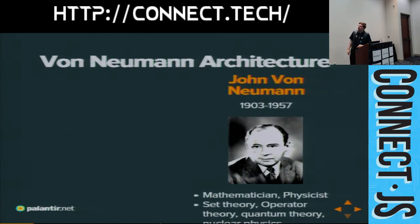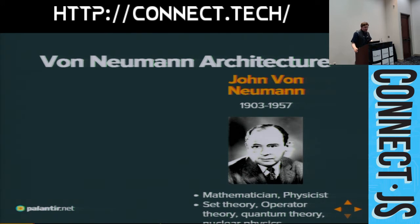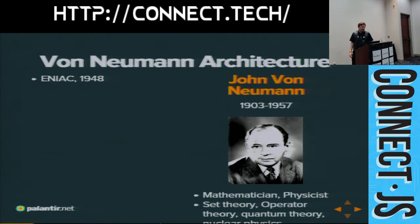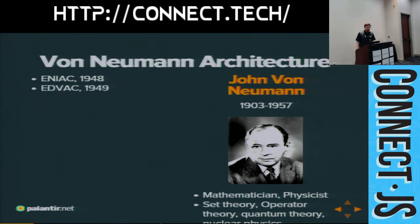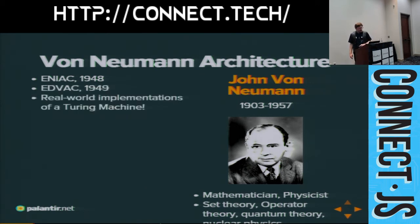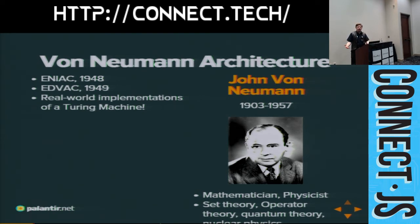Let's fast forward a little bit to a man named John Von Neumann — another mathematician and physicist who helped develop set theory, worked on the Manhattan Project, worked on quantum theory. One of those people who is way too smart for his own good that we don't hear about enough. He was also a consultant on the ENIAC project — one of the first electronic computers, which came out shortly after World War II — and then the EDVAC shortly afterward. These are real-world implementations of a Turing machine. They were programmed by screwdriver, but it was a set of state stored in memory, and you fed a series of instructions into it via punch card that changed that state. This is a Turing machine.